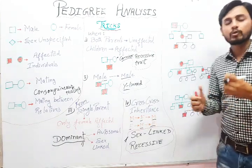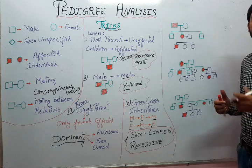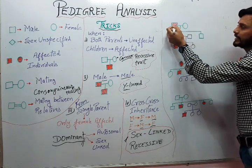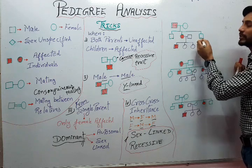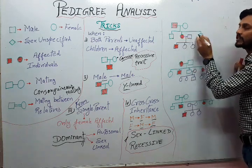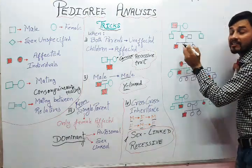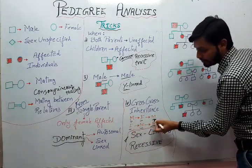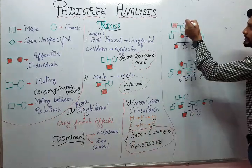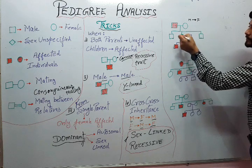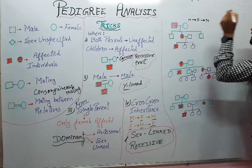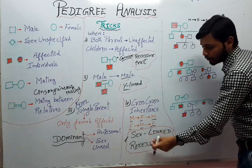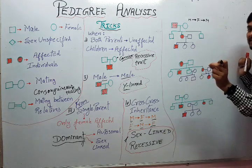Now let's look at an example from question papers. Here, a male is affected; in the next generation, out of three children, a female is affected; and when that female mates, the next generation shows an affected male — male, then female, then male. This is the criss-cross inheritance pattern, indicating that it is a sex-linked recessive character.